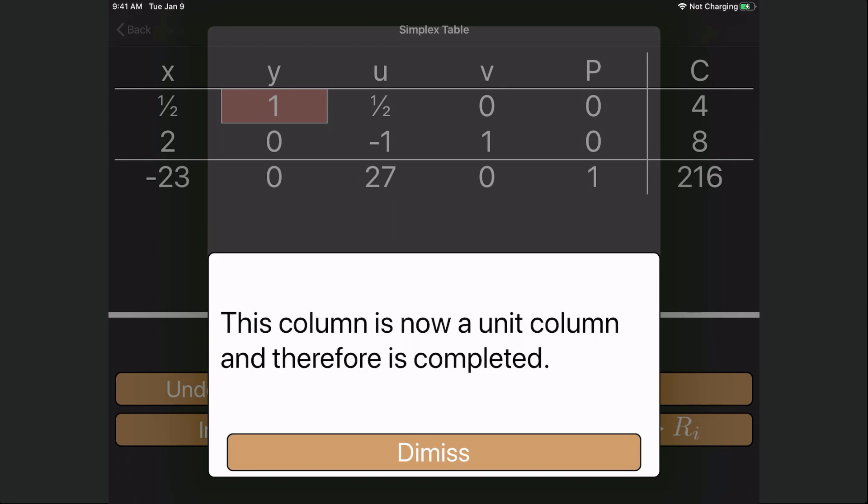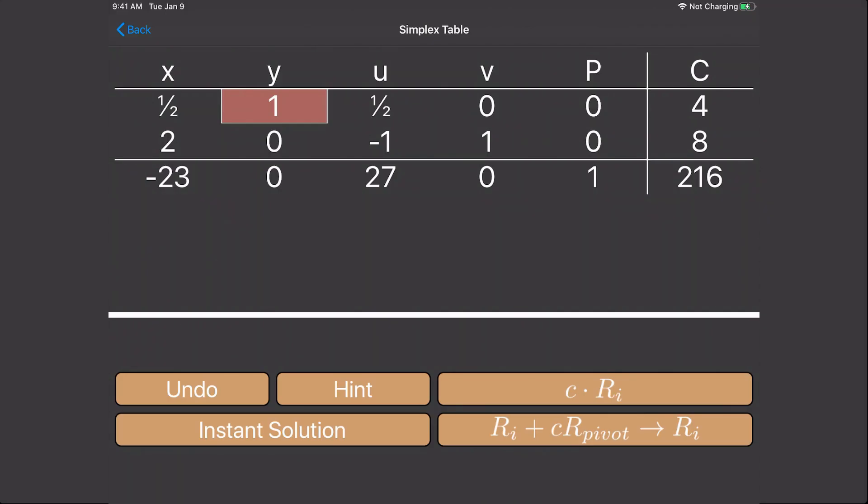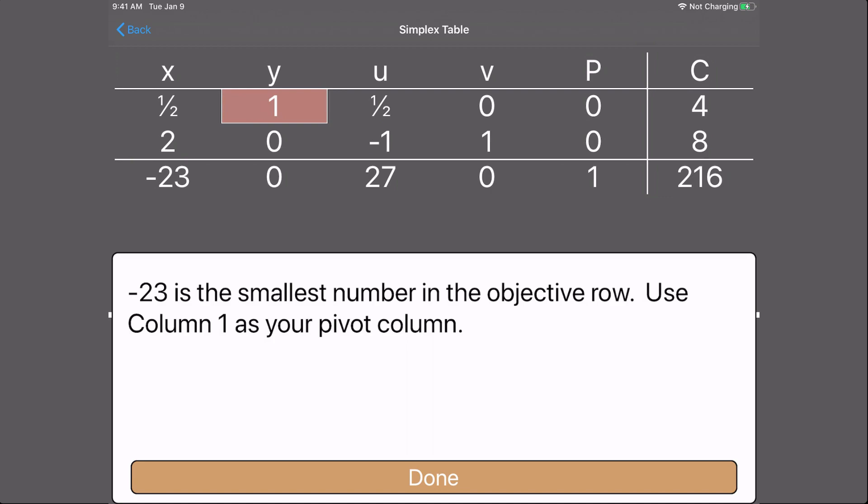Congrats, you have completed one iteration of the simplex method. Now we continue to do this until there are no negatives in the constant column and no negatives in the bottom row. But since there's still a negative in the bottom row, we have to do another round of the simplex method. We start by finding the pivot column. Now column 1 is the pivot column because it has the smallest negative in the bottom row. To find the pivot row, we calculate the ratios.